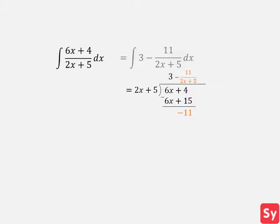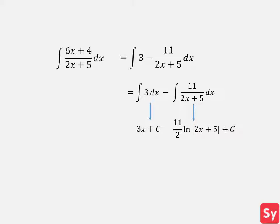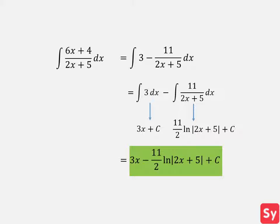This is our simplified fraction, so we will substitute this into the integral. Next we will use the sum rule to split the integral into two simpler integrals. We solve each integral, then add them together and get our answer: 3x minus 11 halves times ln of 2x plus 5 plus C.